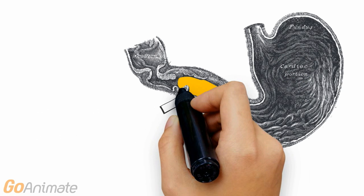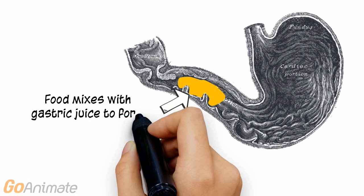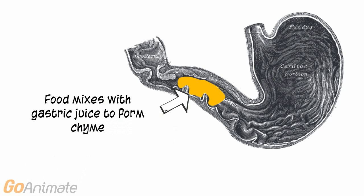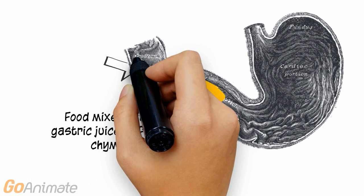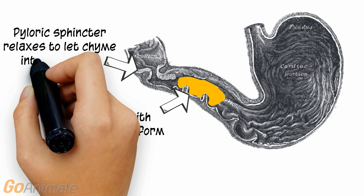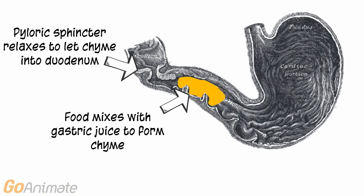Food mixes with the secretions of the stomach, called gastric juice, to form a pasty substance called chyme. The pyloric sphincter relaxes to let chyme out of the stomach and into the first portion of the small intestine called the duodenum.